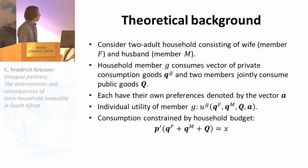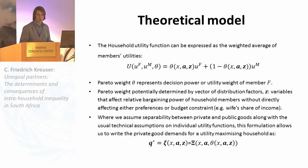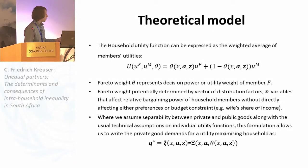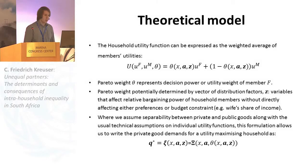The household function can be expressed as the weighted average of the members' utility, and we see this new term theta. This may be dependent on total income of the household, the preference factors, and distribution factors. This Pareto weight represents the decision power or the utility weight of the member in total household utility. The Pareto weight may potentially be determined by this vector of distribution factors — variables that do not enter the household budget constraint nor the preferences of individual members, but may affect the bargaining power of each household member. Assuming some separability between private and public goods, we may rewrite private good demands as a function of income, preferences, and distribution factors.